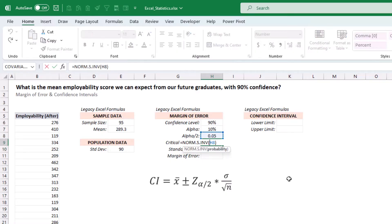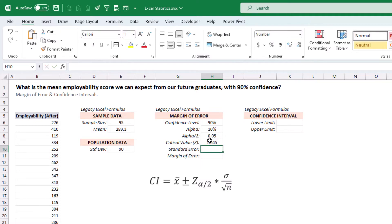We could also do the z-score at 1 minus alpha divided by 2, which will get us the same value, just positive. So let's use that one. And this is going to represent a number of standard deviations away from the mean.